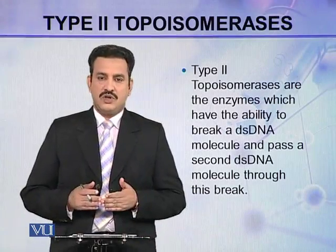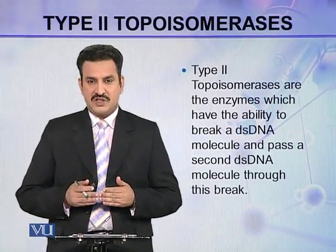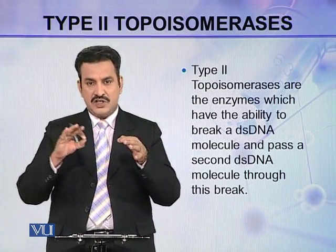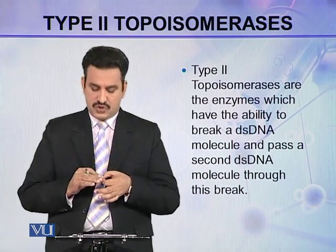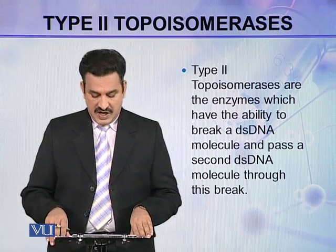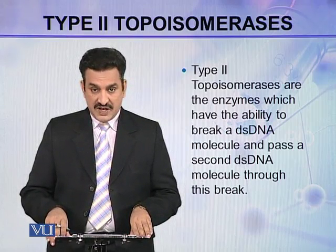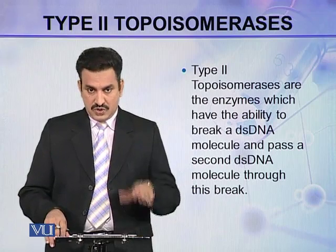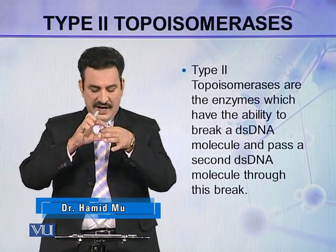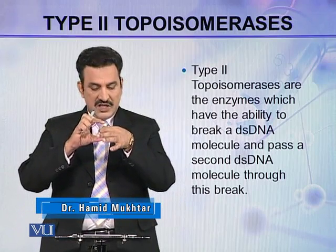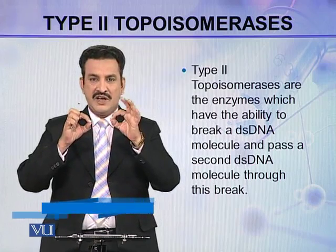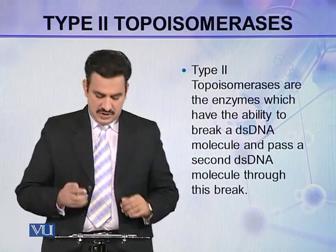Type 2 topoisomerases act to decatenate or segregate catenated circular chromosomes. They have the ability to break a double-stranded molecule, and then pass a second double-stranded molecule through that break. In this way, they decatenate the chromosomes.